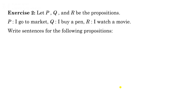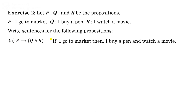Exercise 2: P, Q and R are the same propositions and we have to write sentences for the given propositions. First: P implies (Q AND R). P is the condition, Q AND R is the conclusion — 'If I go to market, then I buy a pen and watch a movie.' Second: (negation P AND negation Q) implies R — 'If I do not go to market and do not buy a pen, then I watch a movie.'